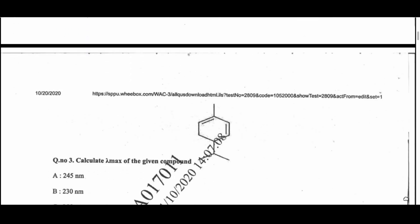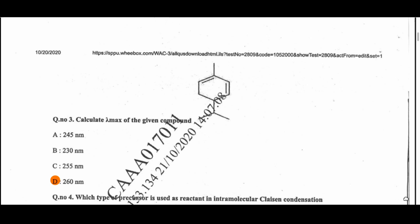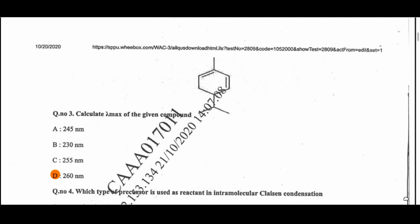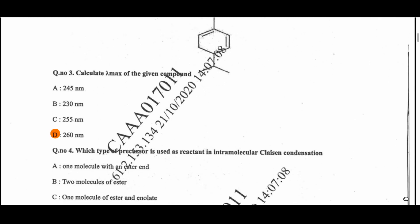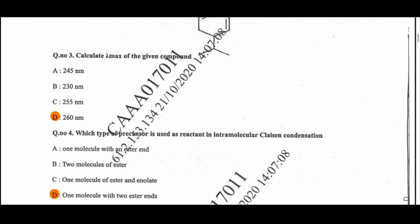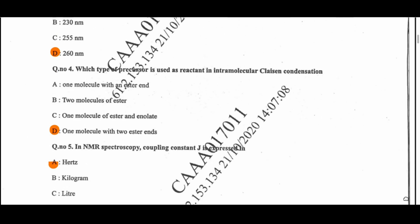Question 3: Calculate lambda max of the given compound. It is a diene. The answer is 260 nanometers. The rule used is the Woodward-Pfizer rule, by which we can calculate lambda max for the given diene as well as for enone.